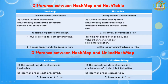By default, HashMap is not synchronized. However, we can get a synchronized version using the Collections utility class method: Collections.synchronizedMap(), which takes a Map interface object and returns a synchronized Map.